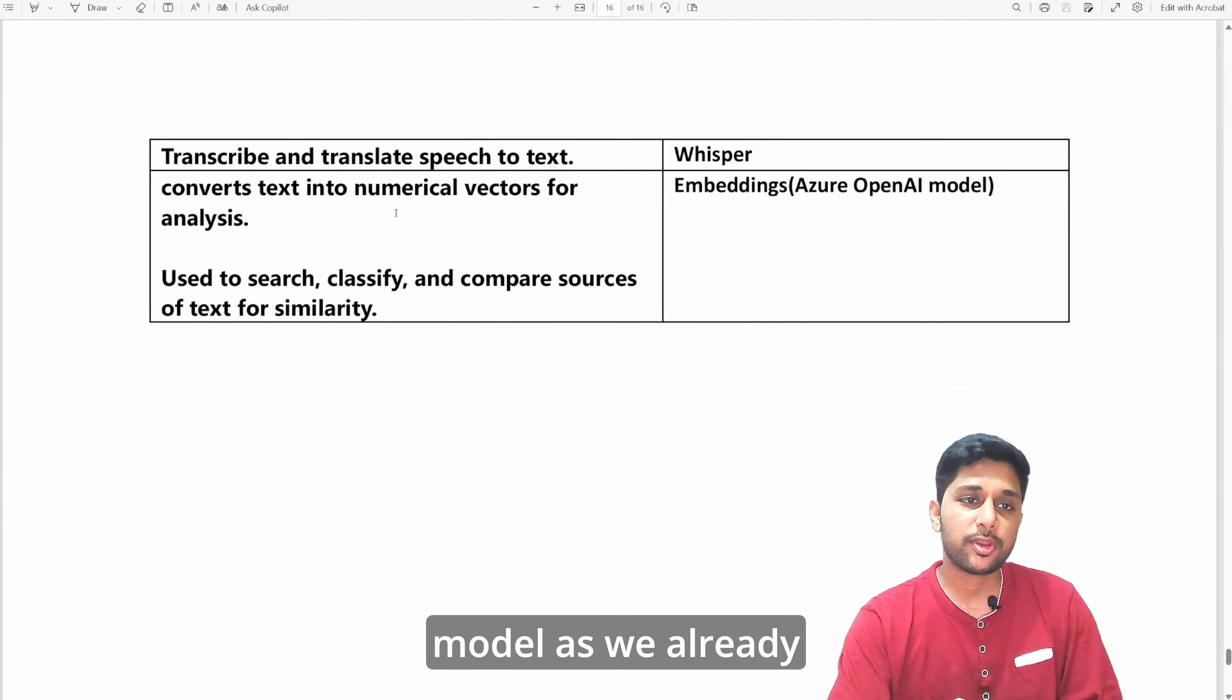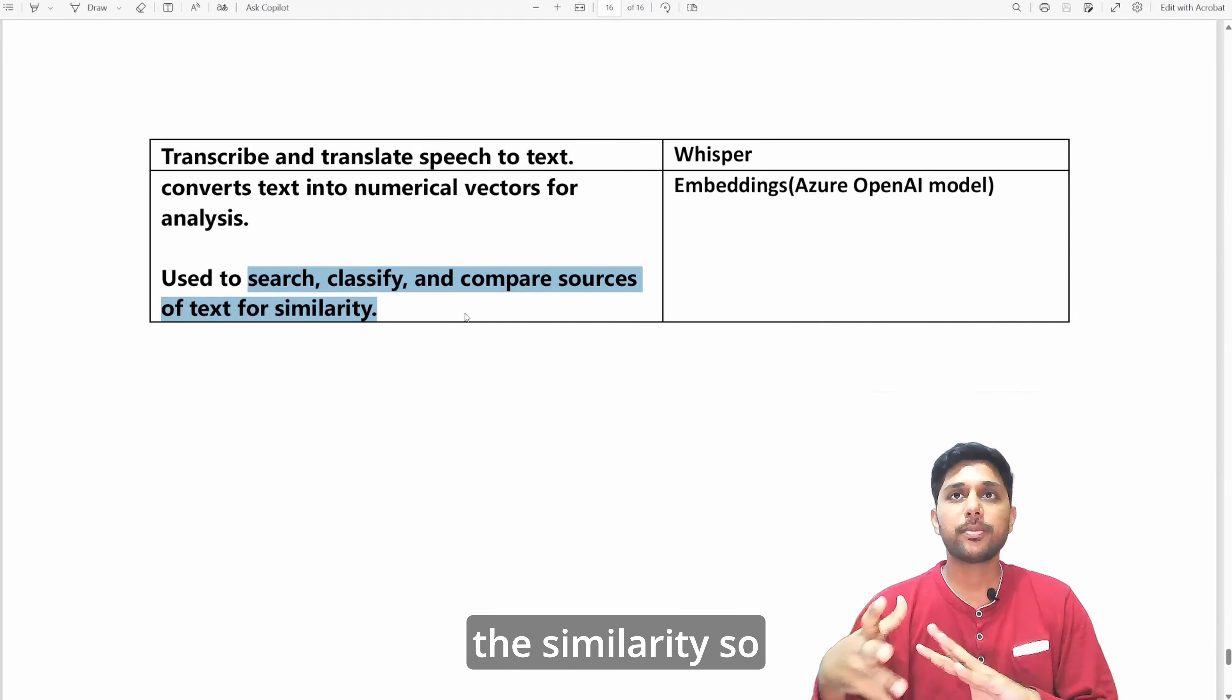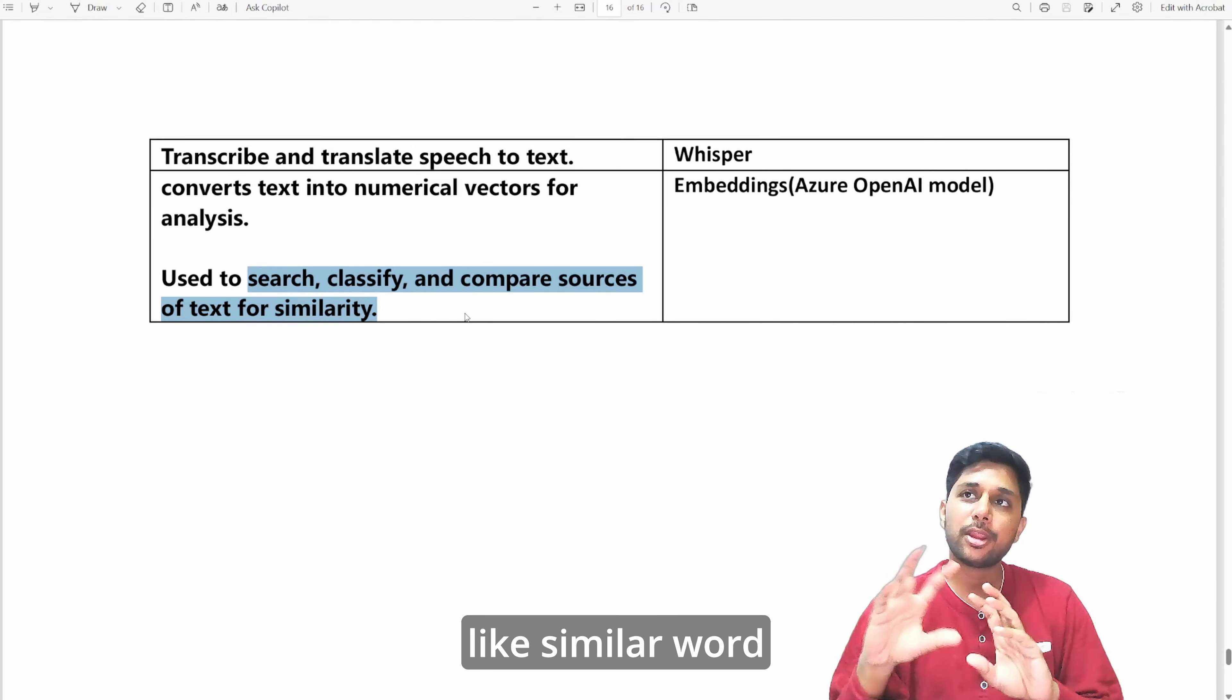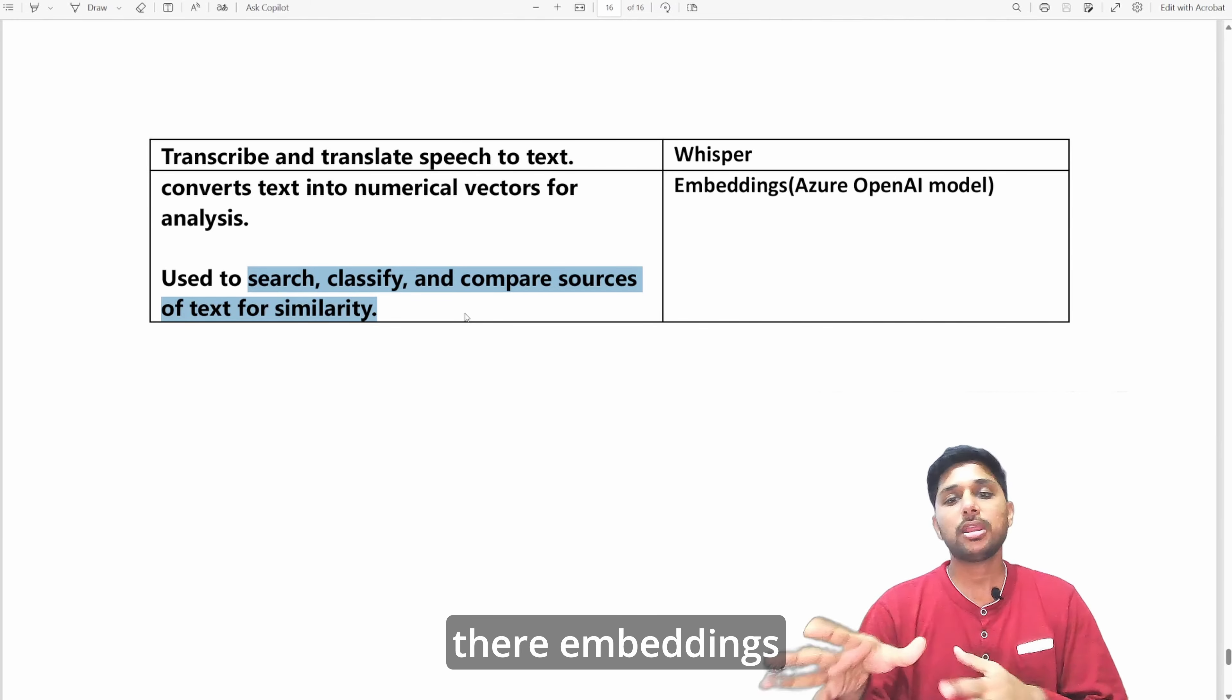The last thing is embeddings from the Azure OpenAI model. As we already talked about, it converts text into numerical vectors for analysis and is generally used to search, classify, and compare sources of text for similarity. When it generates new content, it wants to search similar words because it cannot utilize the exact words, so it will try to make it authentically new. It will compare those texts and search for similar words and try to draft a new sentence. Embeddings come into the picture and are utilized extensively there.